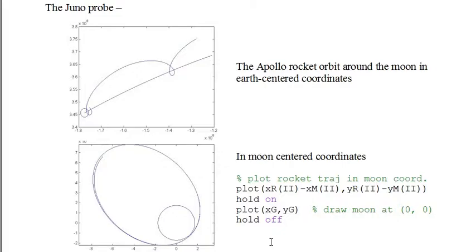But first we want to revisit the Apollo project to make a couple of observations and to pick up some programming tips. The top graph shows the Apollo rocket orbiting the moon, graphed using the Earth-centered coordinates we use for the model and computations. But how does the rocket look as seen from the moon?